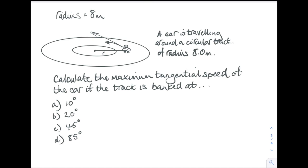I'll show you how to do the first one. We're going to use the relationship we just derived: v equals the square root of gr tan theta. Our first example is when theta is 10 degrees.